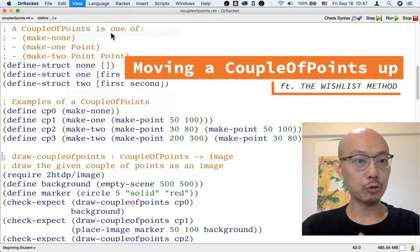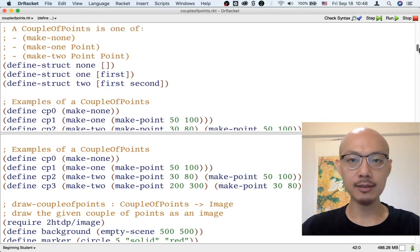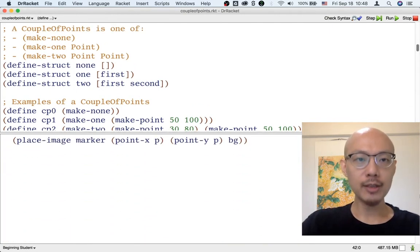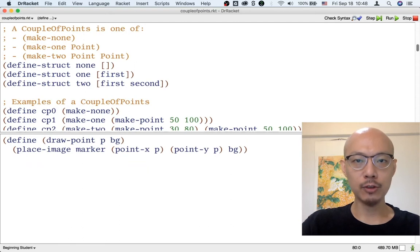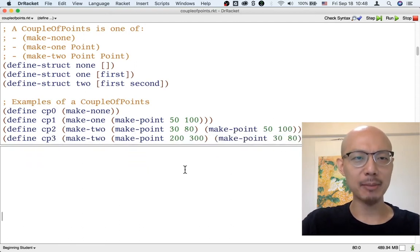So far, we've introduced the data definition for a couple of points and designed the function drawCouplePoints. Already, this is enough for a Big Bang animation that is not really animated.